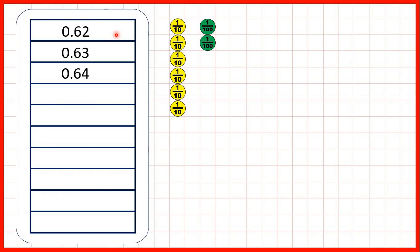Now let's practice counting in tenths or hundredths. So first we have 0.62, 0.63, then 0.64. So what are the next seven numbers going to be?